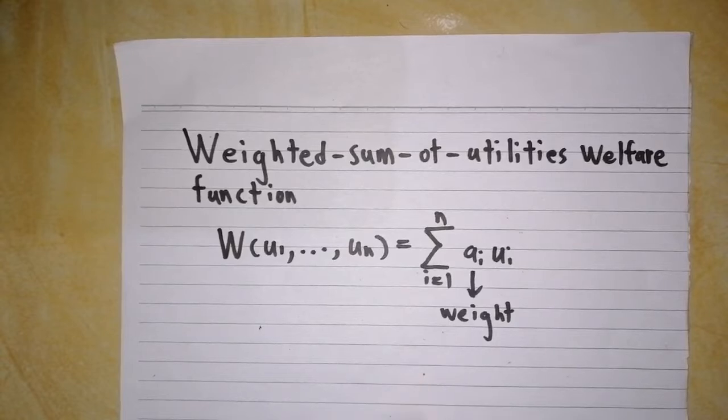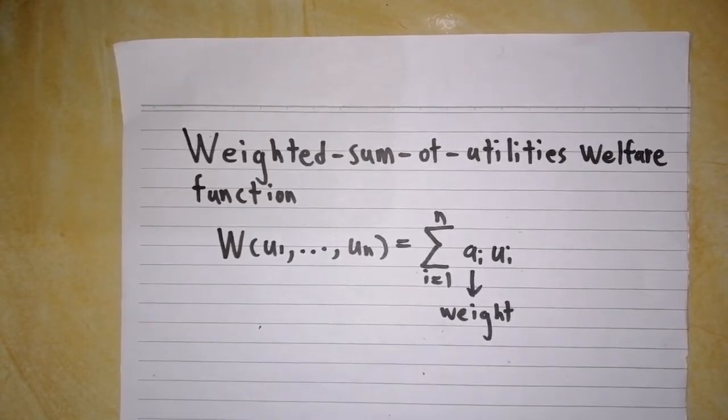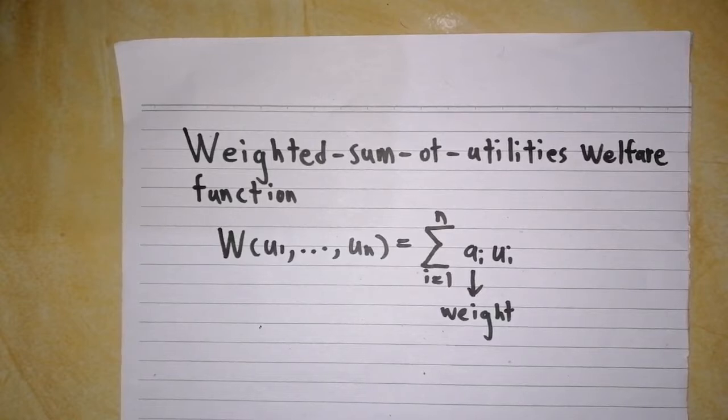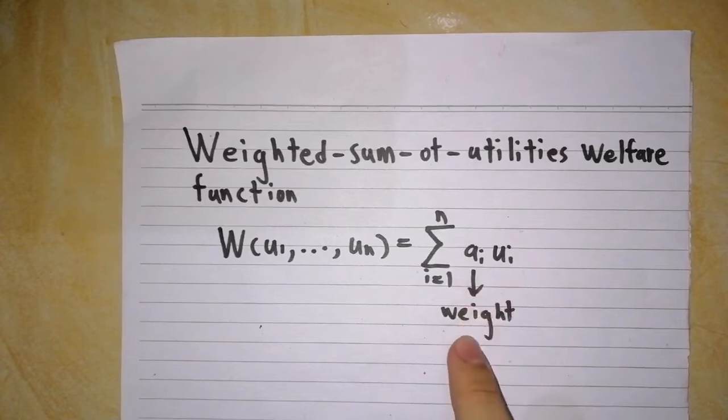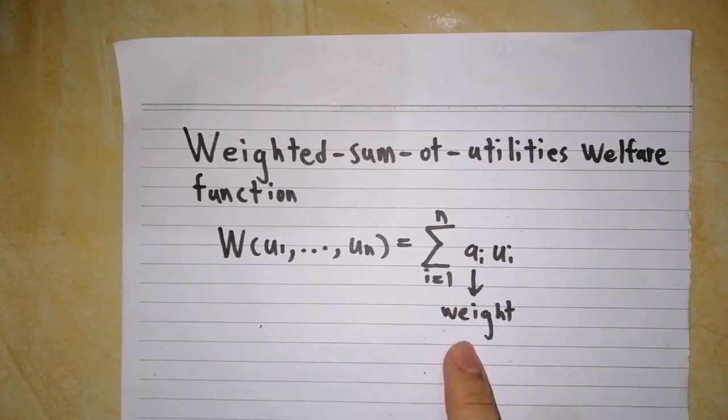Now this is another form of welfare function, weighted sum of utility welfare functions. It's basically the same as the social welfare function, but here we add an A, which refers to the weight and indicates the importance of each agent in the society to the overall social preference.